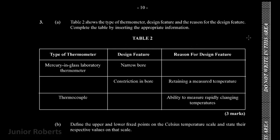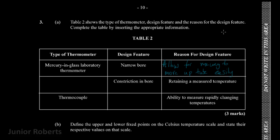So we have our table with the type of thermometer, the design feature, and the reason for the design feature. Starting with the mercury-in-glass laboratory thermometer: the design feature is that there is a narrow bore, and the reason for that is to allow mercury to move up the tube easily. The narrow bore gives us a small space for the mercury to expand, allowing the liquid to travel up the tube quite easily.